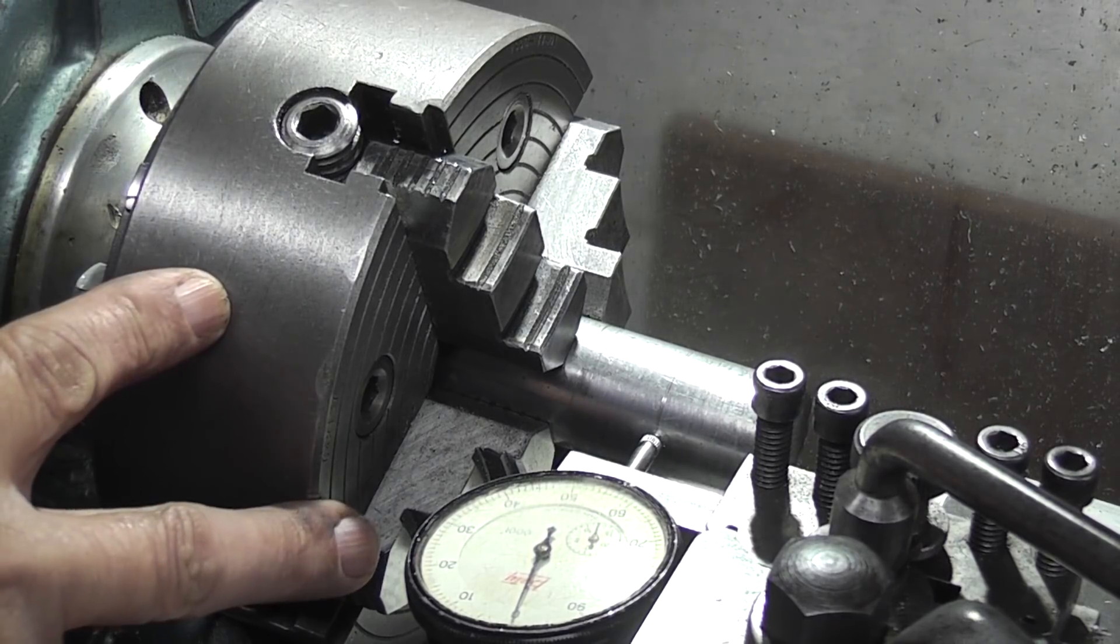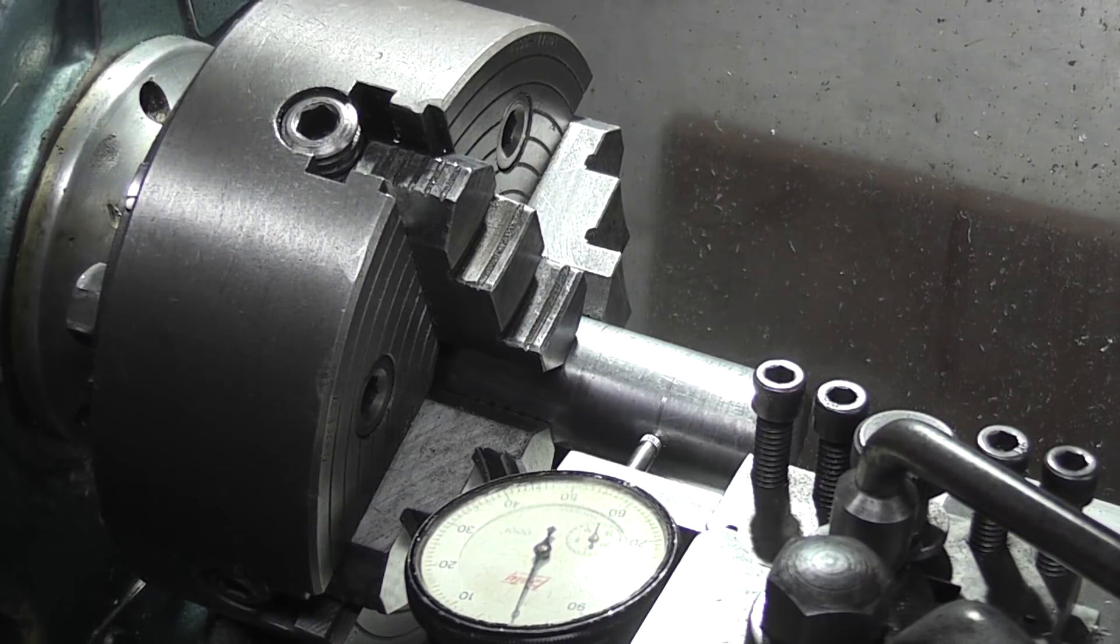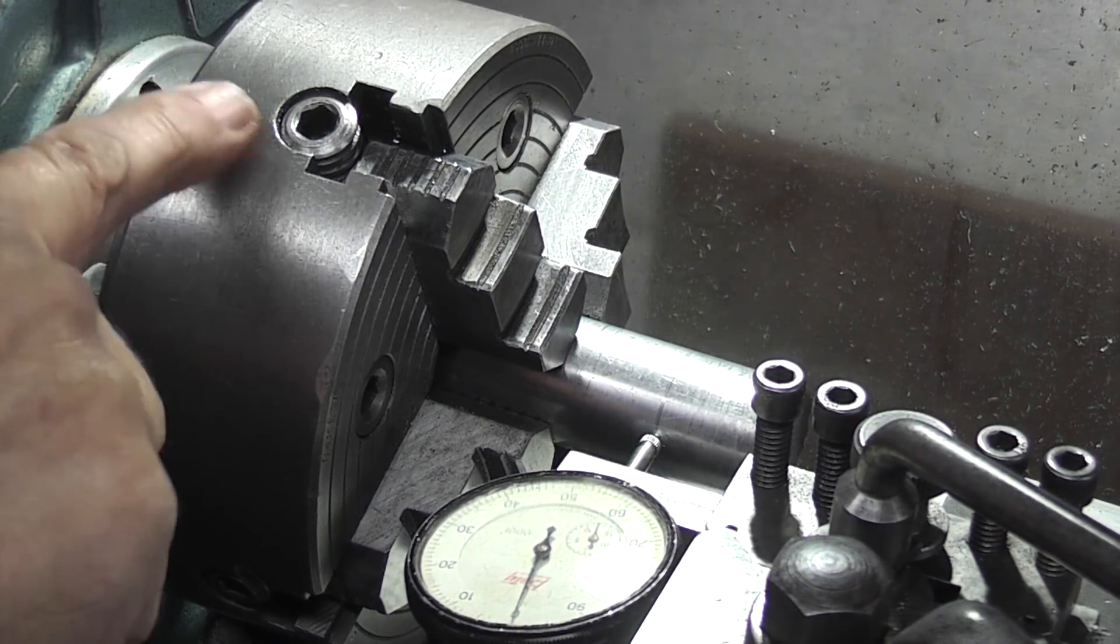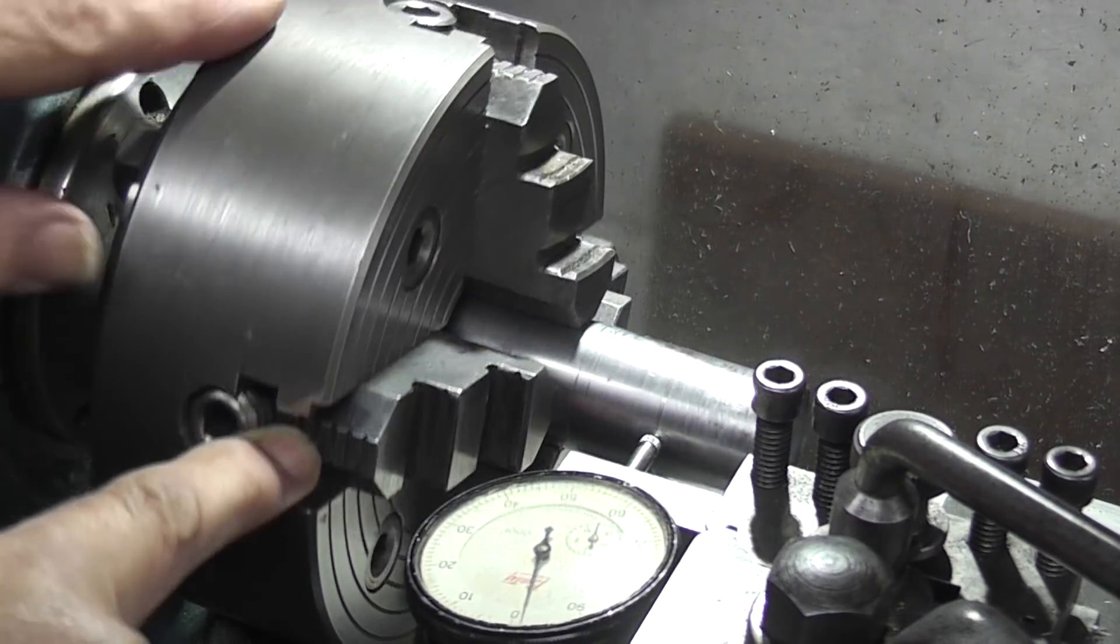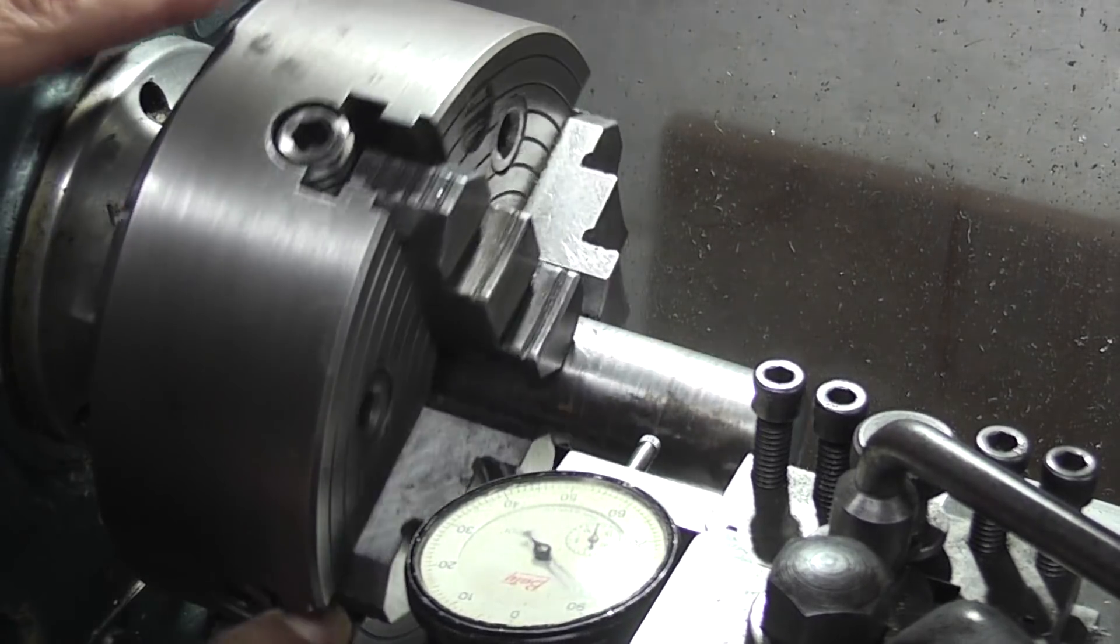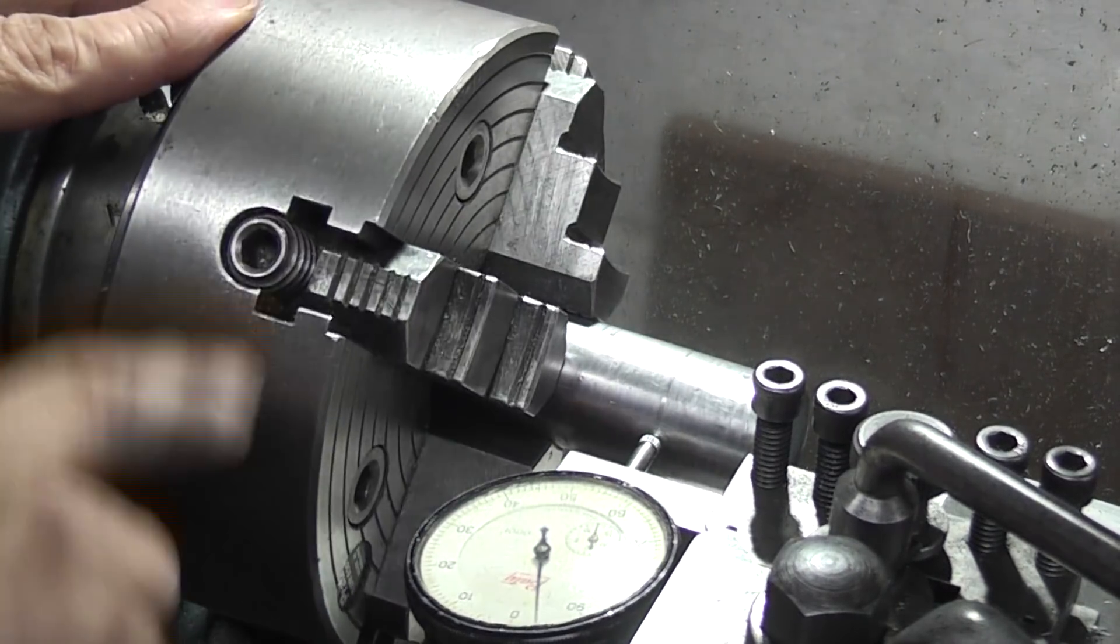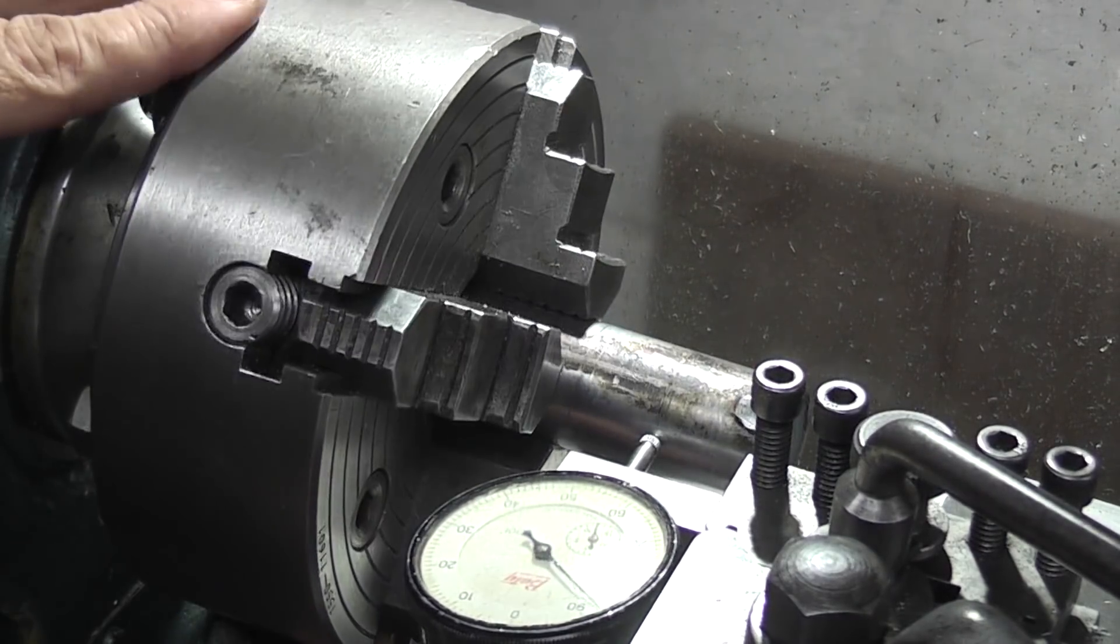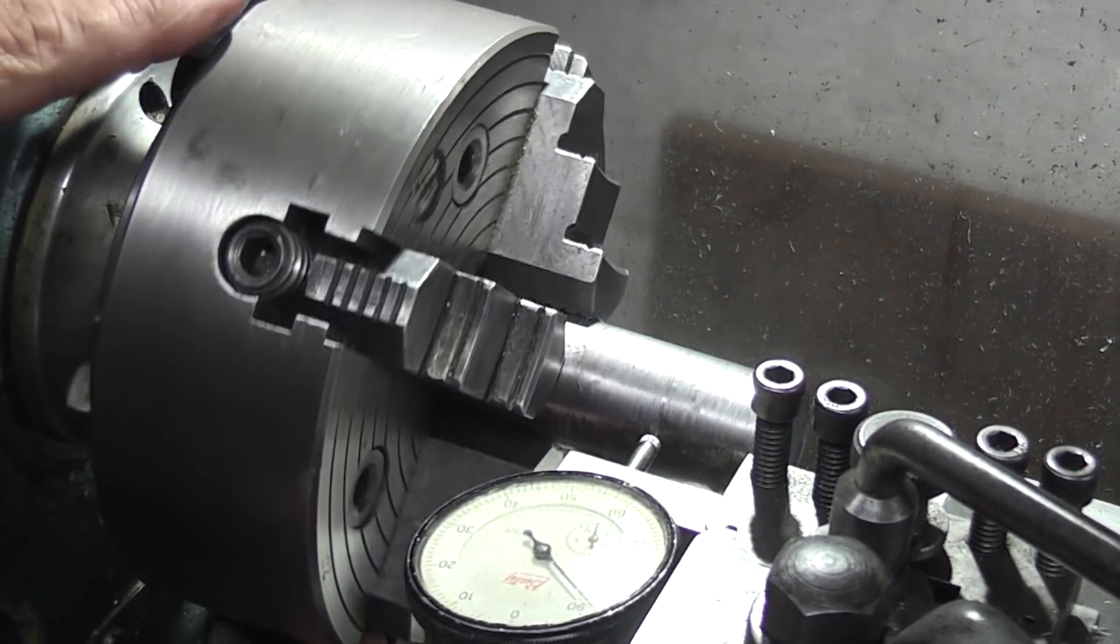I have the four jaw chuck in the headstock, dial indicator, my tool post and I've adjusted the jaws so I get the reading as true as I can. This is running out about a thou, thou and a half.